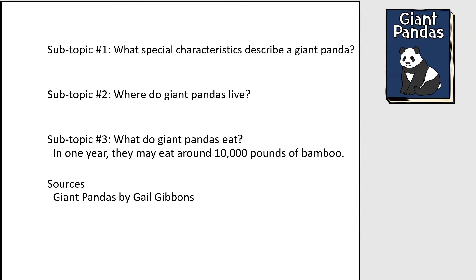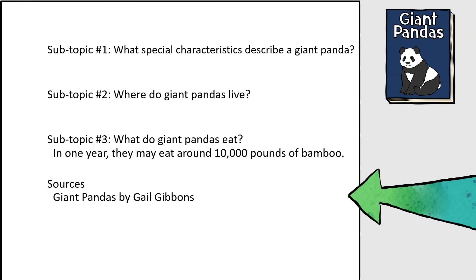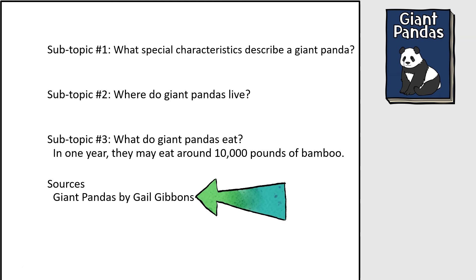I found out that in one year, they can eat around 10,000 pounds of bamboo — incredible. So I wrote that down. I thought that was a good, specific example that I could use later. Notice also that I wrote down the source: 'Giant Pandas' by Gail Gibbons. That's how we'll write sources for books — the title and the author's name.